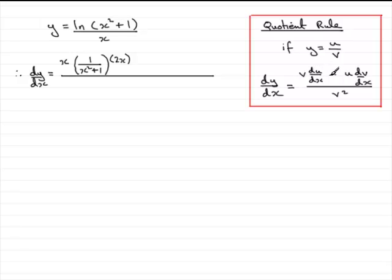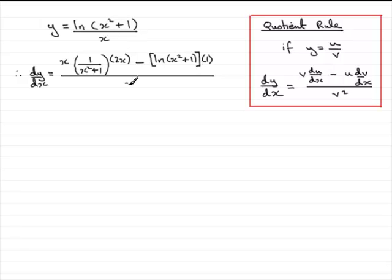Now that we've worked out that part, we've got minus, and we now need to do the top of the fraction, which is the natural log of x squared plus 1 — just write that in brackets. We need to multiply it by the differential of the denominator. If you differentiate x with respect to x you get 1. According to the formula, we then divide by the square of the denominator. The denominator is x, so we square that to get x squared. That's essentially dy/dx.